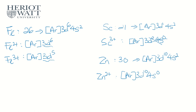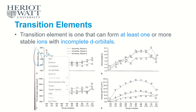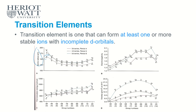That covers the definition of transition metals, which applies to other periods as well. Now let's look at some graphs. The first graph focuses on atomic radius. The general trend from scandium decreases all the way to nickel, then slightly increases to copper and zinc.